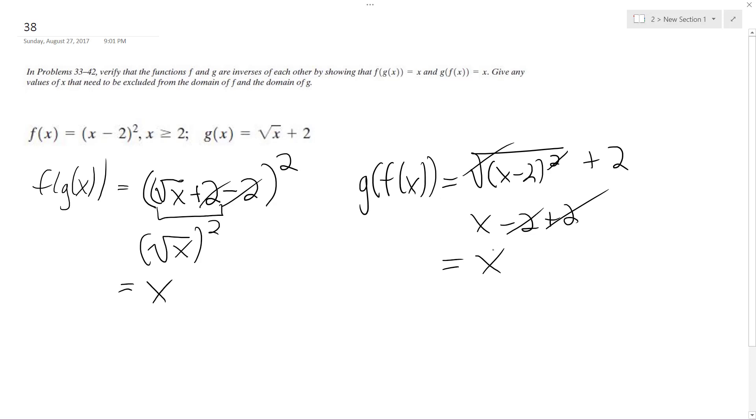So they're inverses of each other. But is there any limit on the domain? And yeah, there is. x is anything greater than or equal to 0. Because on g of x, if you have anything less than 0 in here, it's going to be invalid. And it's okay here for g of f of x, because anything squared ends up being positive. So these are inverses of each other, and x is going to be anything greater than or equal to 0.